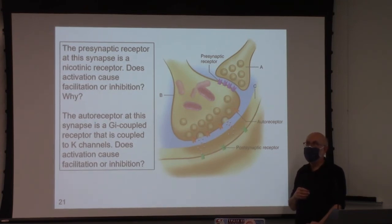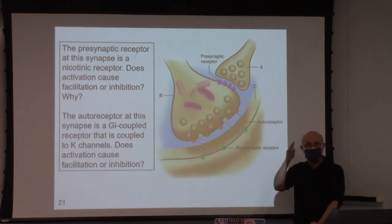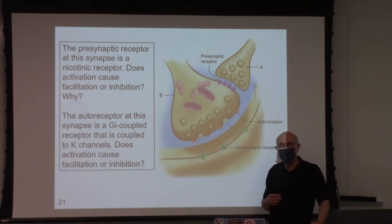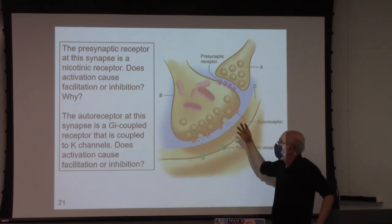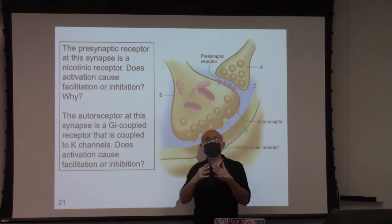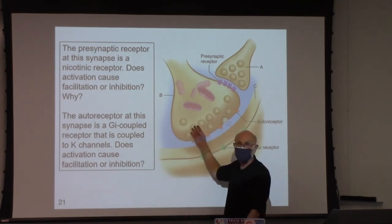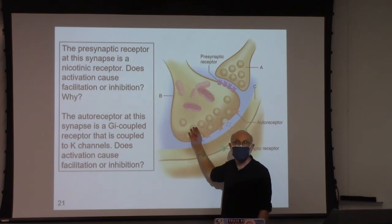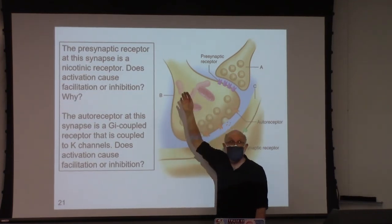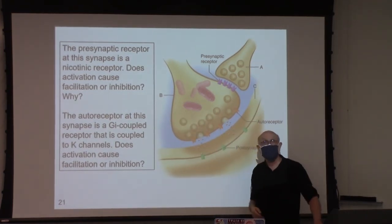I think you know the answer. If the potassium channels were open, that would cause inhibition. Indeed it would. Potassium channel activation — more potassium efflux out — hyperpolarization. Hyperpolarization negatively summating with the depolarization results in less neurotransmitter release — inhibition.